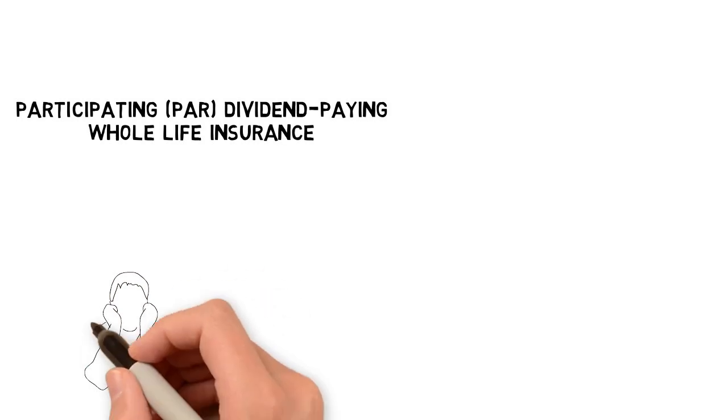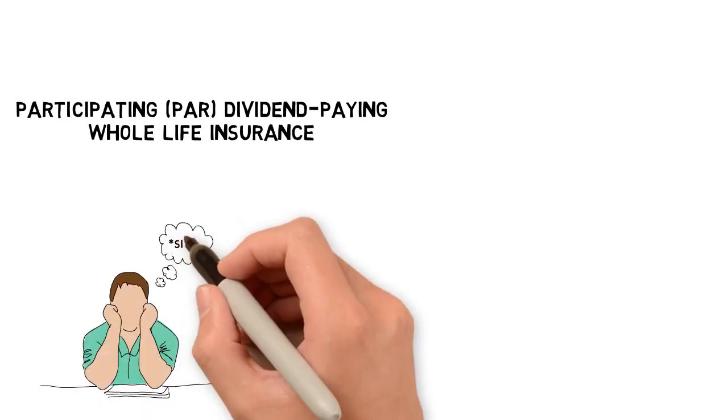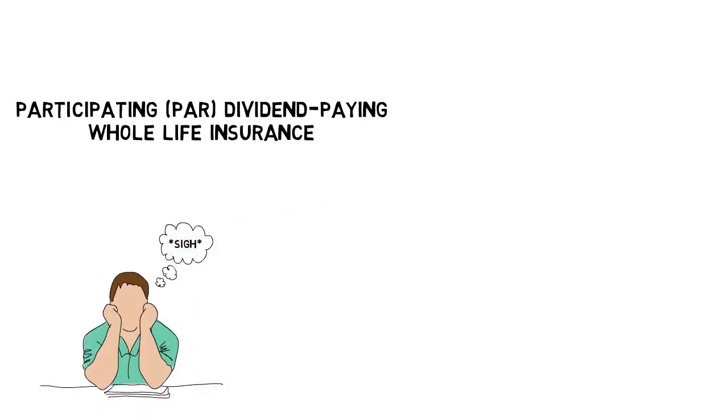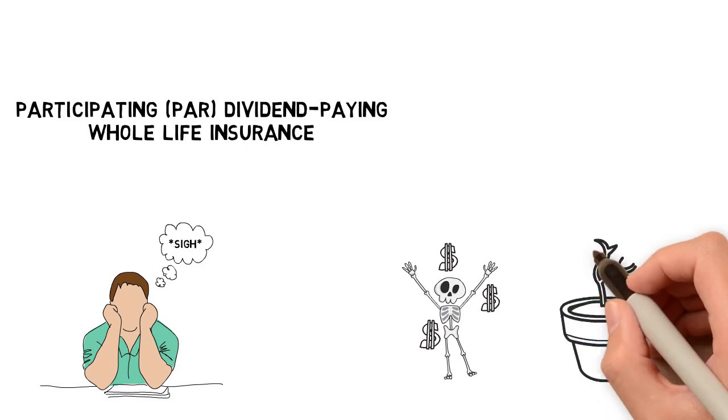Okay, we can hear the collective sighs as you read that answer. So allow us to explain. With participating whole life insurance, you not only have a valued death benefit, but with each payment, you accrue an associated cash value.